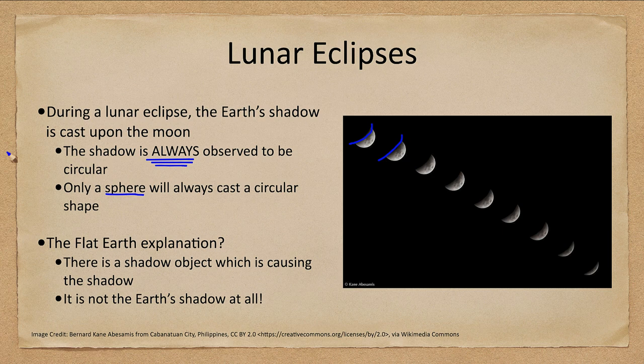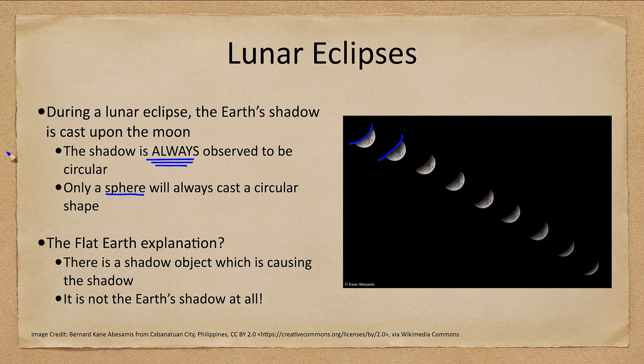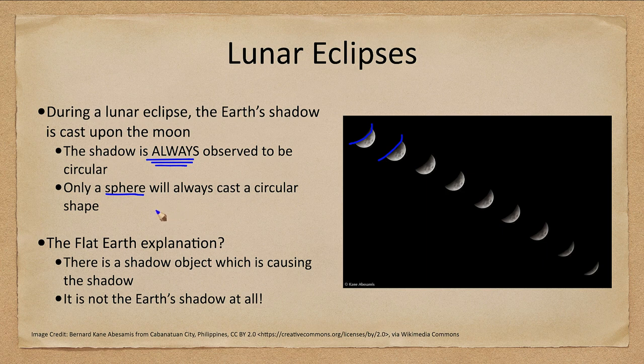This is one of the ways that the Greeks knew the Earth had to be spherical, simply because it was always a circular shadow. If you had a flat disk, depending on the orientation, you would get different elliptical type curves or even flat lines going through the moon. So you would not get a complete eclipse. The fact that we always see a curved shadow, always circular, is very important and shows that the Earth has to be spherical.